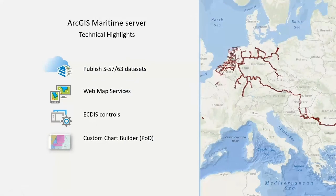Now I'll talk about ArcGIS Maritime Server. It allows you to publish your S57 or S63 datasets as REST or WMS services — web map services. It has a web application that comes with it: one that's JavaScript and one using the Web AppBuilder widgets interface, providing ECDIS-like controls over that data. You can essentially simulate the ECDIS experience in a web application directly from your S57 data.